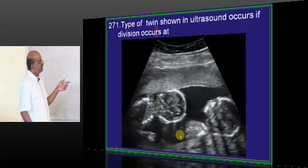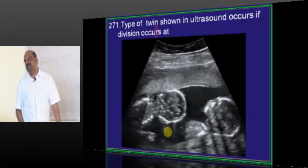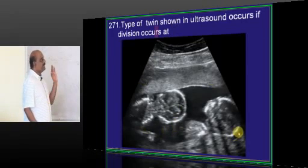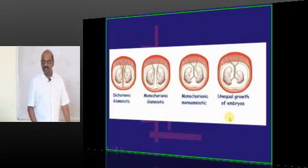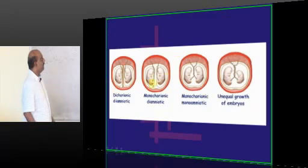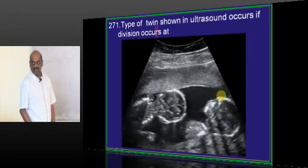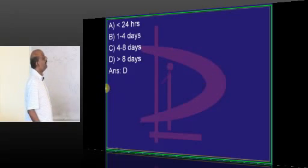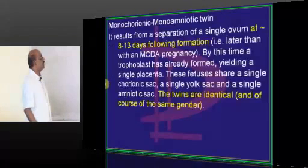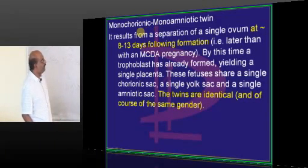What is the type of twin shown, and when will this kind of twin arise? Division at what point of embryogenesis is a very important question on twinning. You must know what are the types of twins available: you have dichorionic diamniotic, monochorionic diamniotic, monochorionic monoamniotic. Amnion is the sac surrounding it, and chorion is the membrane. If there is a monochorionic monoamniotic, there will be no layer separating them at all. This is a monoamniotic monochorionic twin, which typically occurs if the separation occurs more than eight days. Eight to thirteen days following formation, typically if the separation occurs, then monoamniotic monochorionic twinning typically occurs.